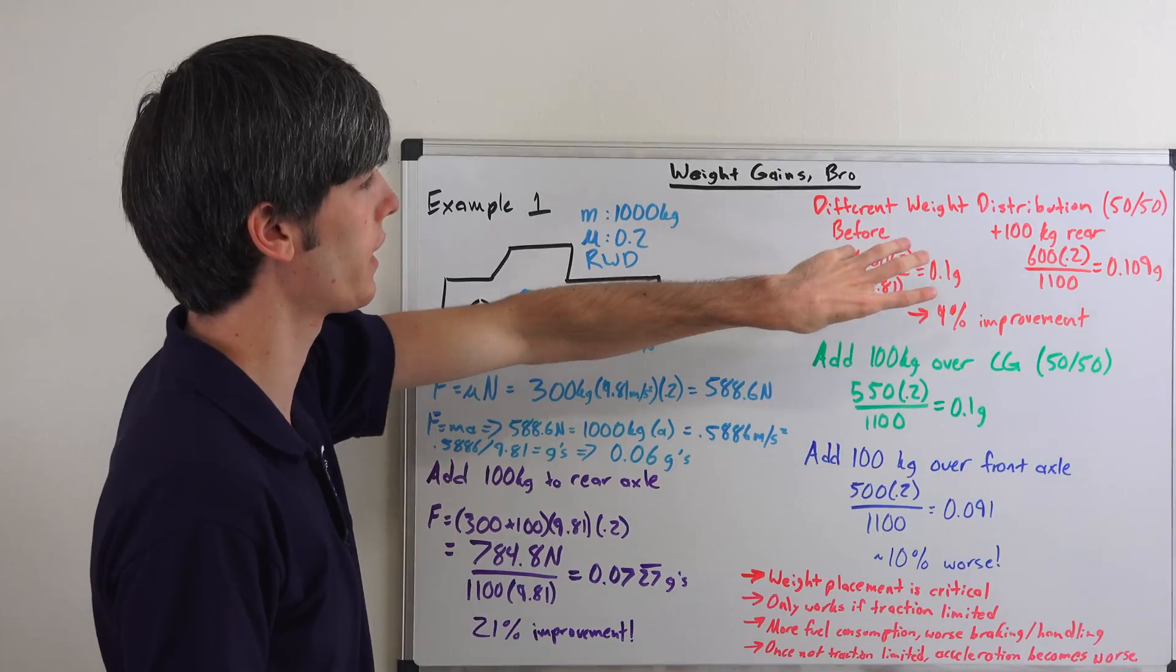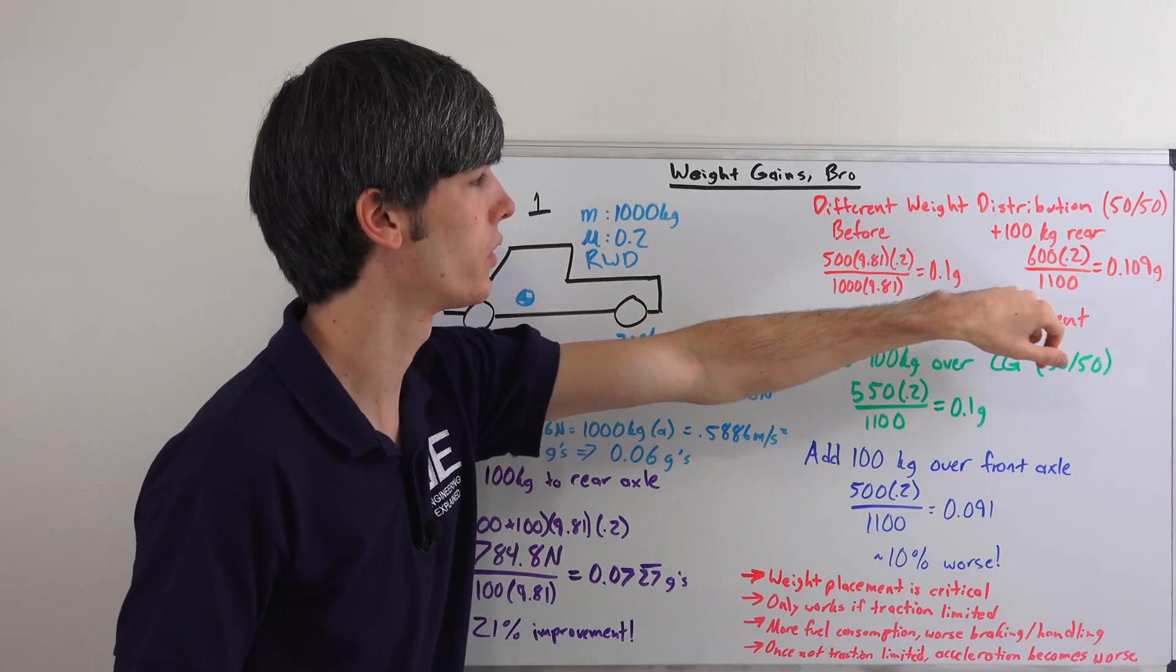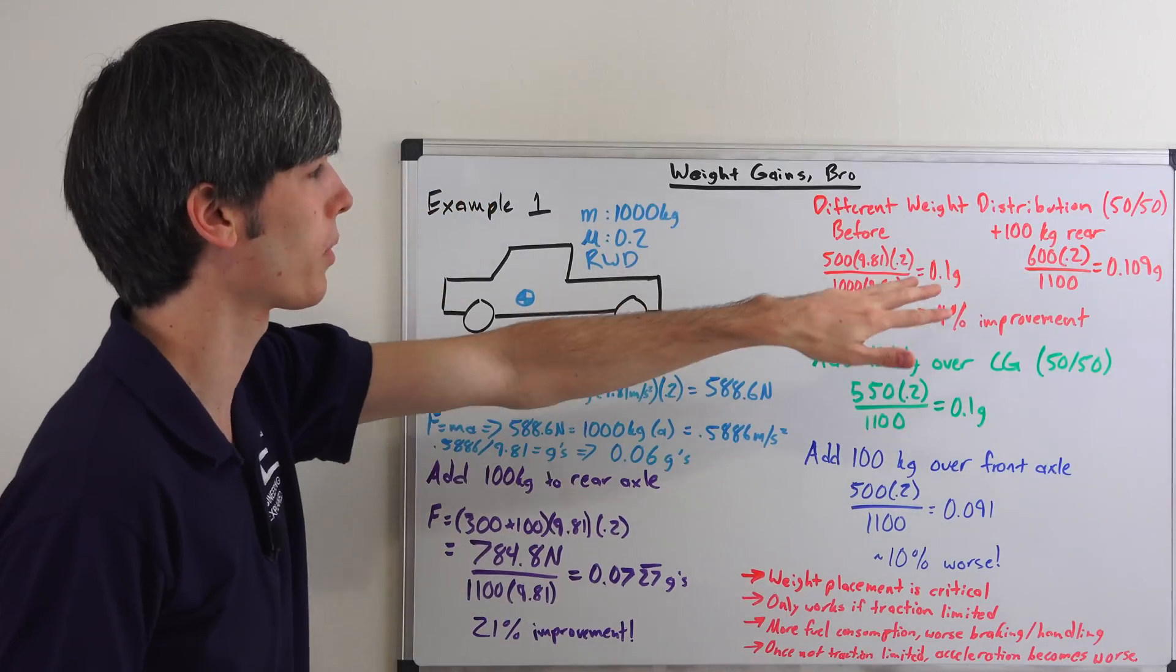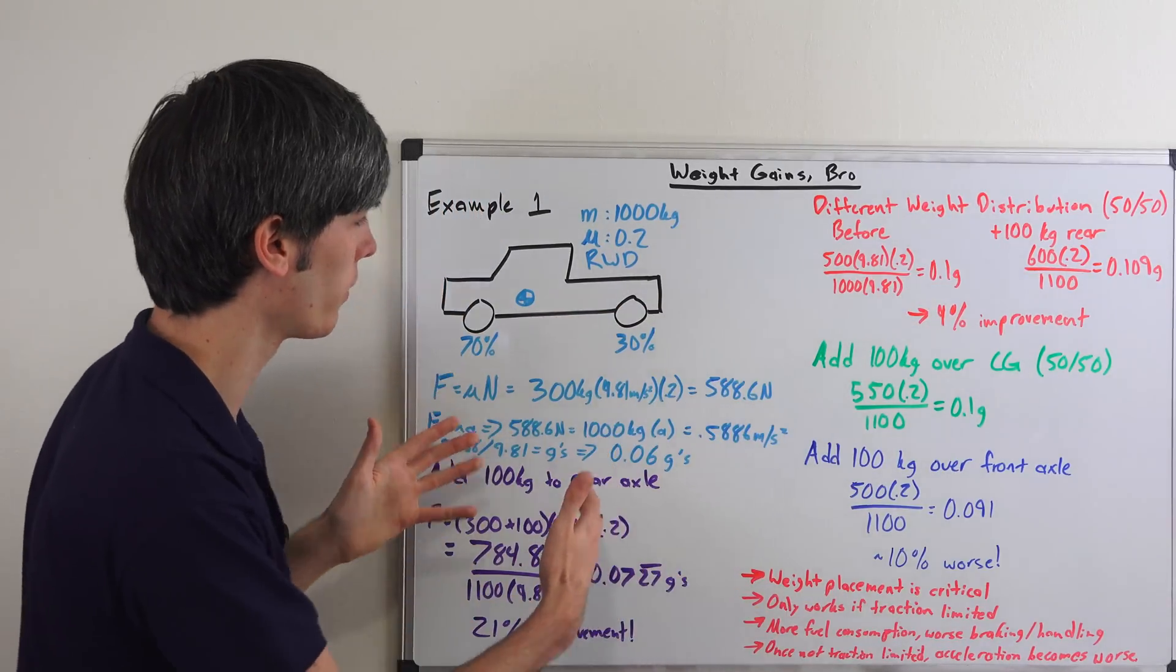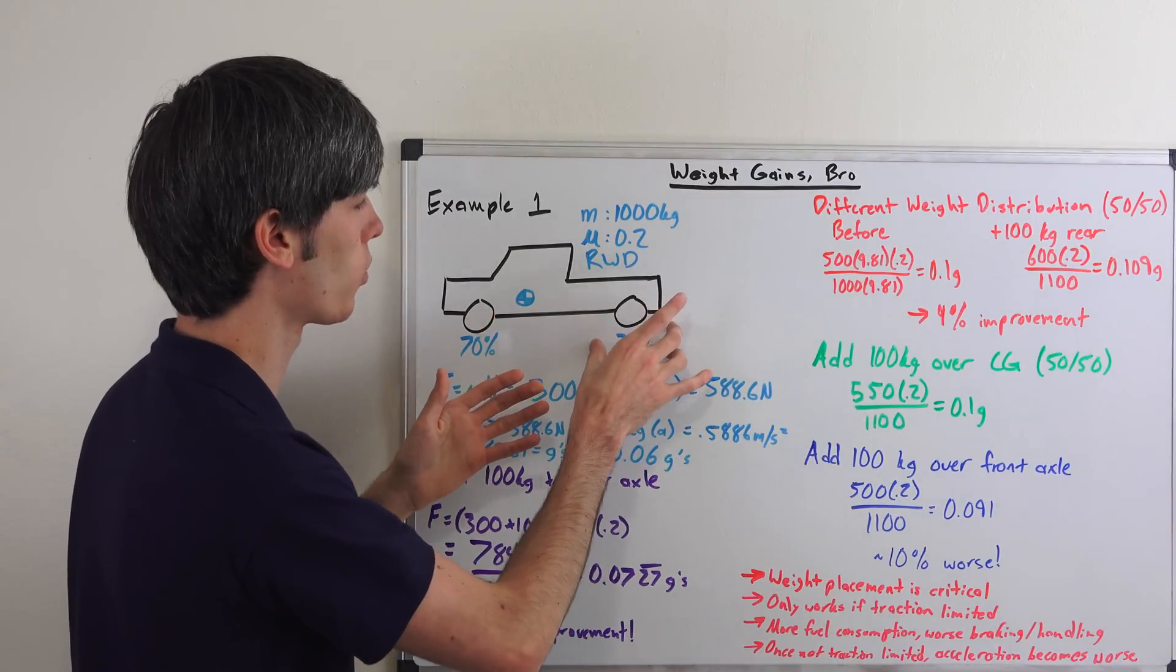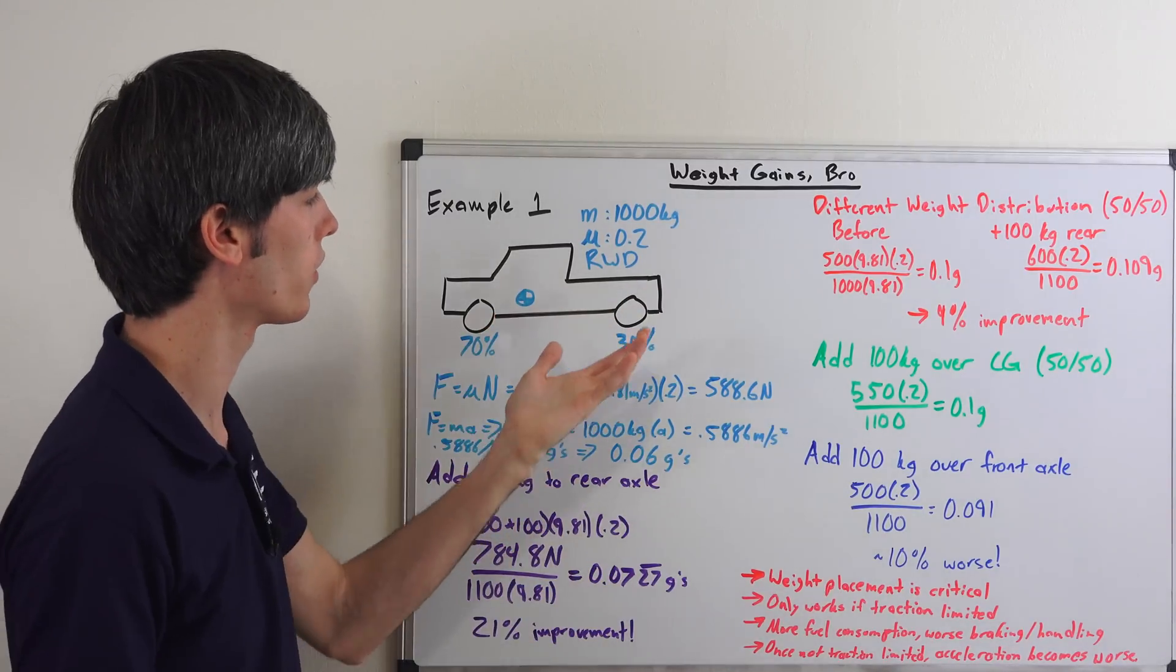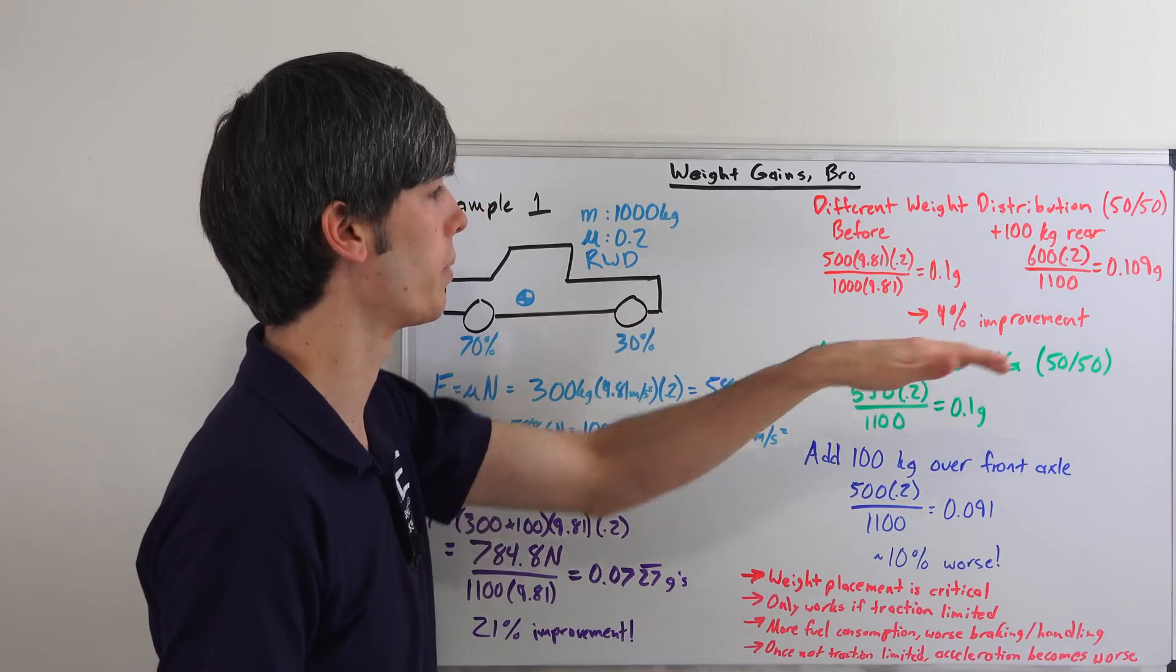Now if we then add 100 kilograms to the rear of the truck then we've got 600 times 0.2 divided by 1100, 0.109. So we're only having a nine percent improvement in this case by adding the same amount of weight that we did previously. So it's going to be more significant in cases where your weight distribution is not in your favor where you have less weight in the rear. So if you have a really light rear end adding weight can cause a significant improvement. If you have a pretty good weight distribution it won't be as significant.